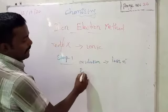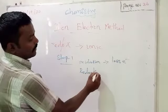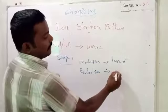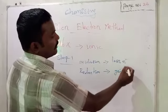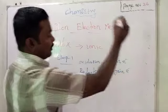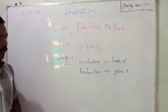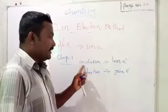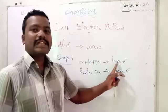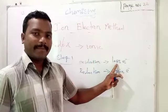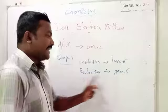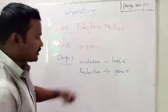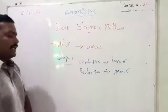Then reduction — how do you find reduction? Gain of electron. So ultimately we can say: increase of oxidation number is oxidation, and decrease of oxidation number is reduction.